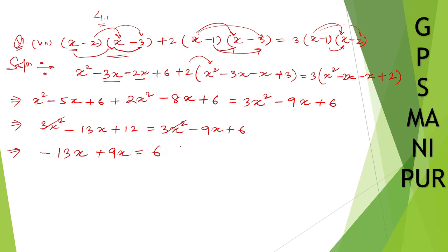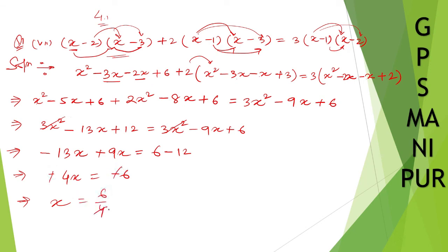Minus 13x plus 9x gives minus 4x. Bringing 12 to the other side gives minus 12. So minus 4x equals 6 minus 12, which is minus 6. The minuses cancel, so x equals 6 divided by 4, which simplifies to 3 by 2. The answer is x equals 3/2. Thank you so much, we will meet in the next video.